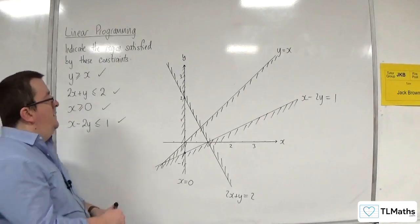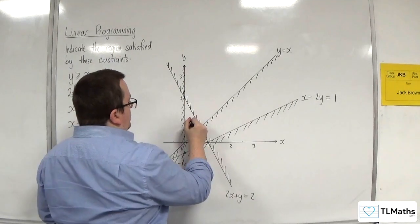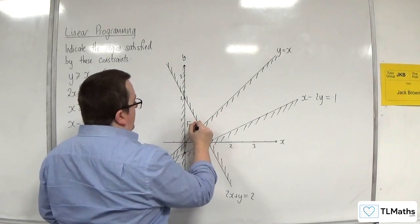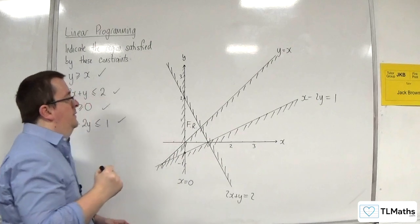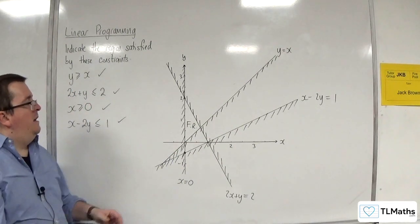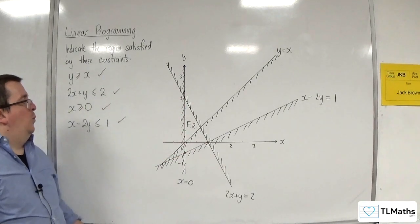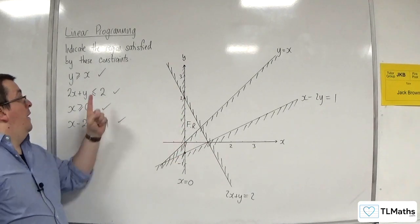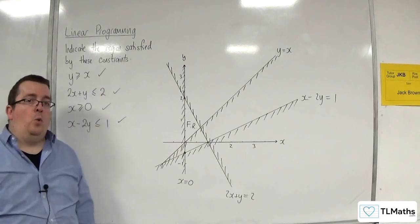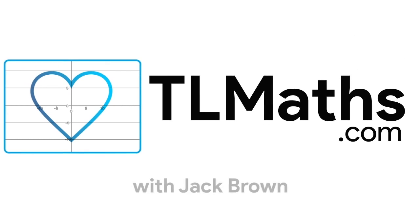So we identify that this triangle that we have here is the feasible region. So because it's quite small I'll label it as FR. So this is my feasible region. And so any point that is inside that triangle will satisfy all four of those inequalities.